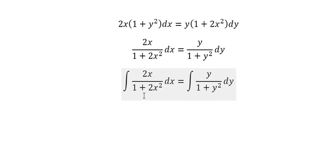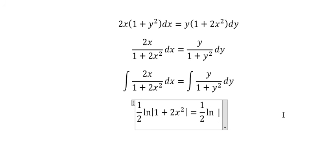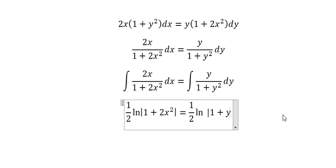The integral on the left gives (1/2)ln|1 + 2x²|. The integral on the right gives (1/2)ln|1 + y²|, and we add the constant C.